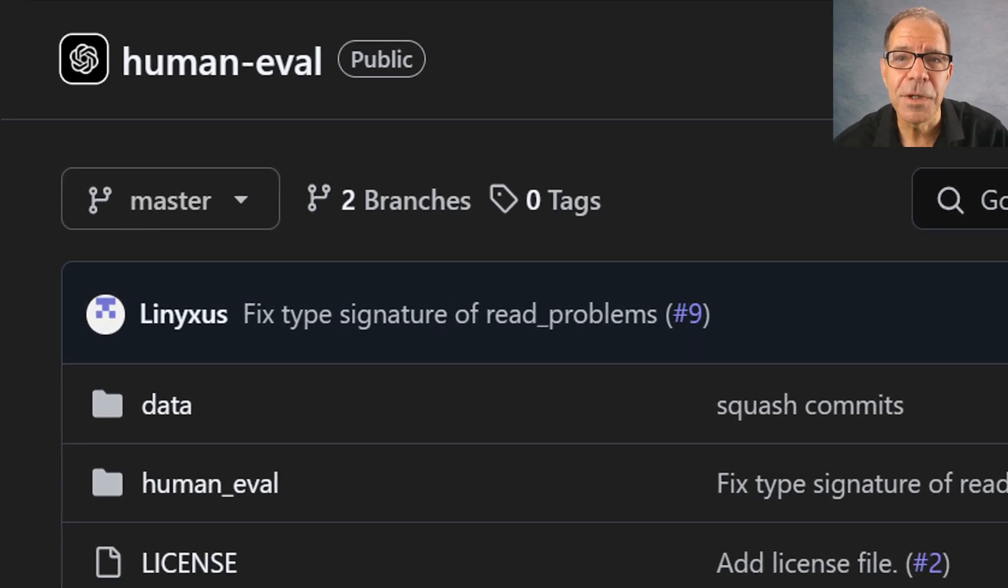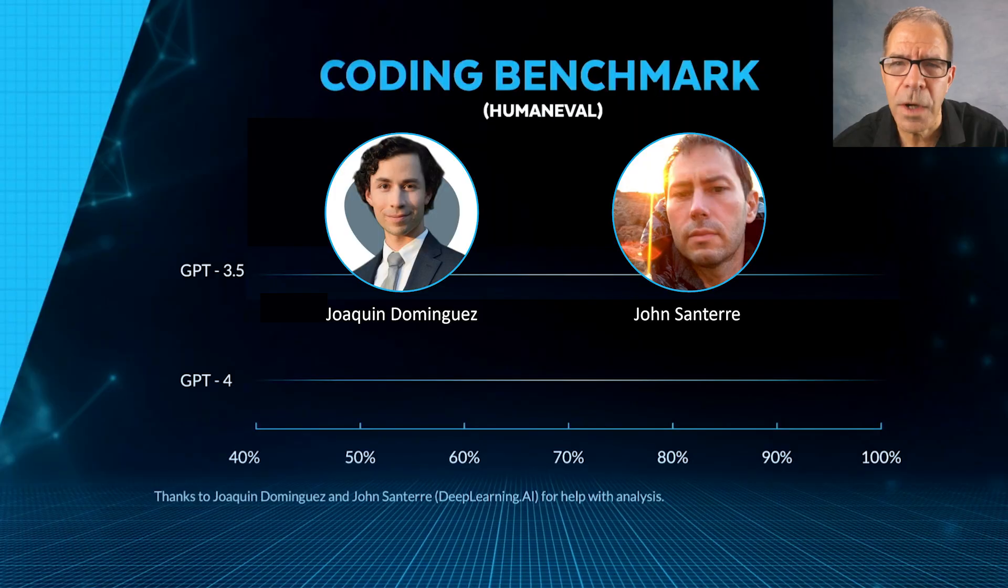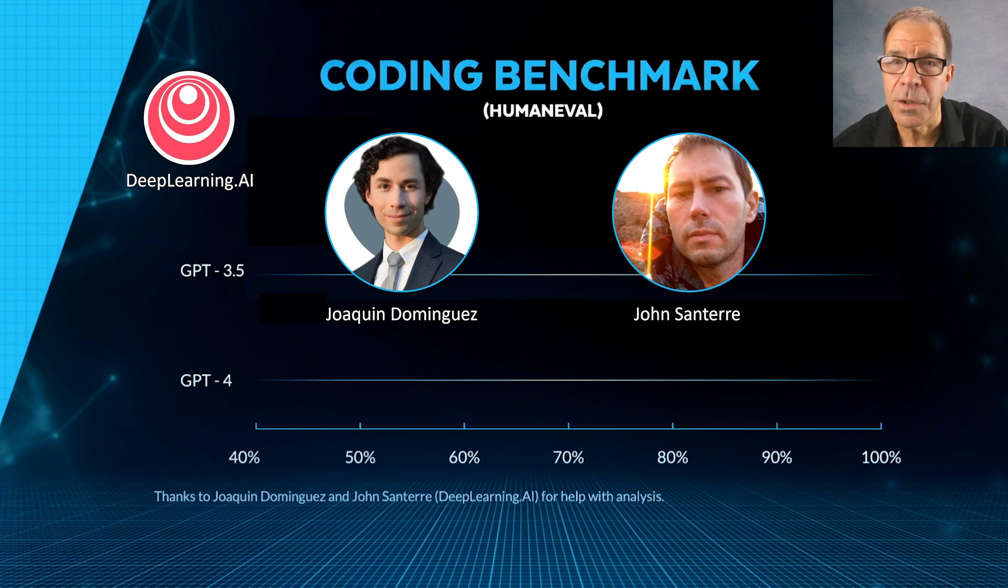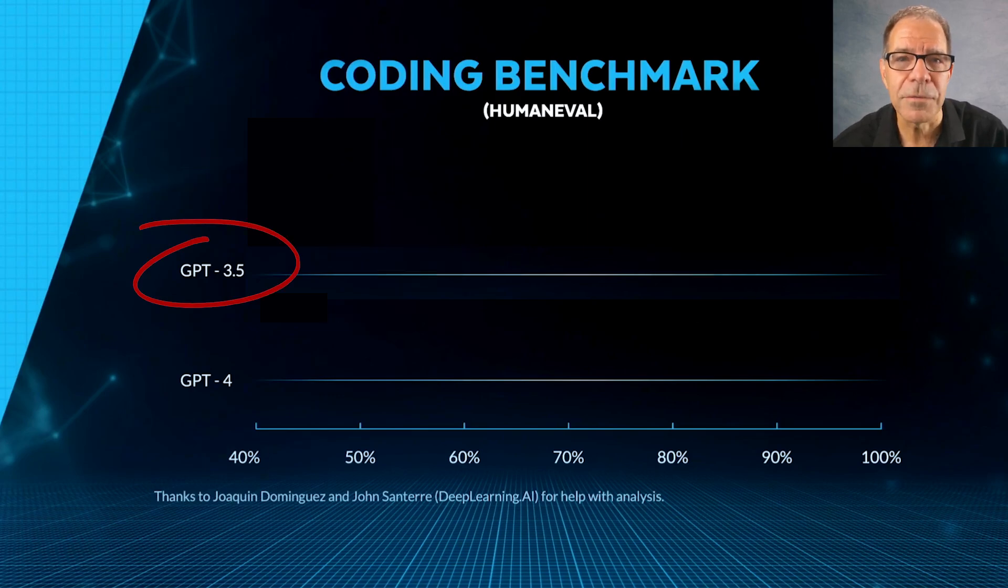For the testing, Andrew Ng tapped on the skills of Joaquin Dominguez and John Sonter from Deep Learning AI, the noted education technology company he founded. The team started by benchmarking GPT-3.5, which achieved 48% on the coding benchmark, as you can see here.